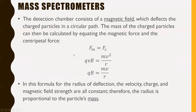The detection chamber consists of a magnetic field which deflects the charged particles in a circular path. The mass of the charged particles can then be calculated by equating the magnetic force and the centripetal force. FM equals FC, so QVB equals MV² over R. Crossing out the V on both sides gives QB equals MV over R. In this formula, velocity, charge, and magnetic field strength are all constant — therefore the radius is proportional to the particle's mass.